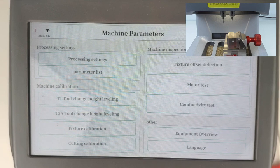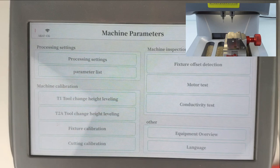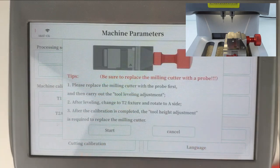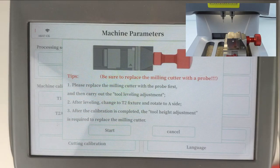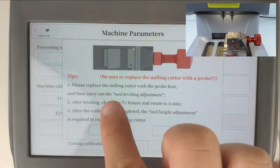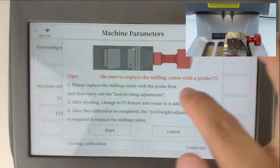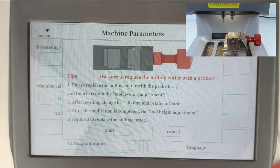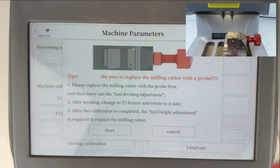Many customers do wrong steps. Here you click cutting calibration. Here we make the word red here. You need to replace the milling cutter with a probe first.